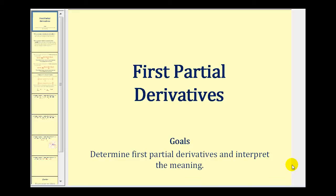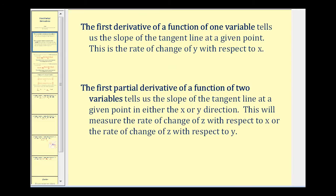Welcome to a video on first partial derivatives. Let's start with a quick review. The first derivative of a function of one variable tells us the slope of the tangent line at a given point. This is the rate of change of y with respect to x.